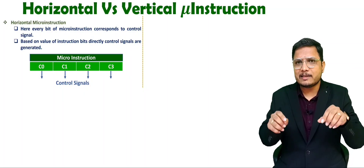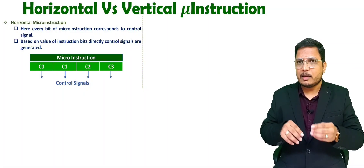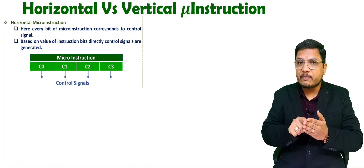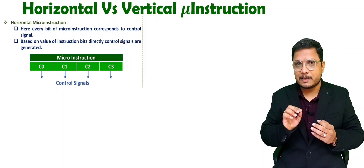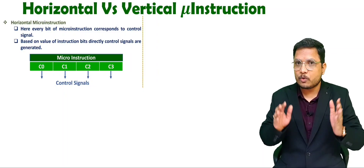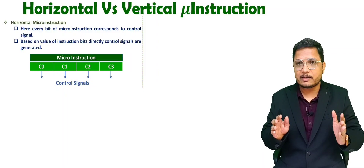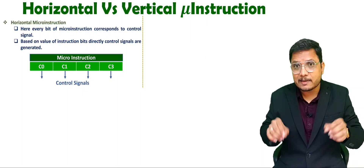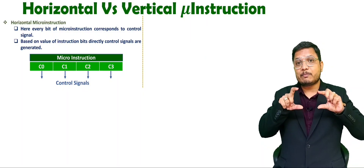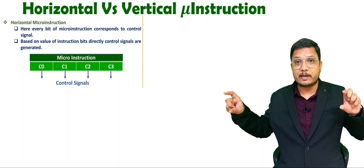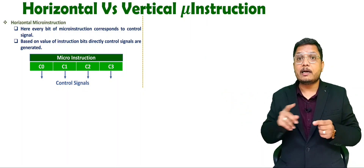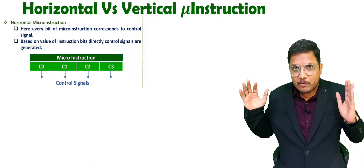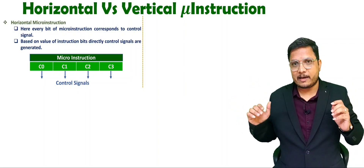Simply, the number of bits defines the number of control signals — that is horizontal micro instruction. As you want to expand the number of control signals, you expand the memory horizontally, meaning the control word size gets wider.